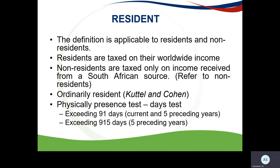There are tests to determine whether you are a resident. The ordinarily resident test was examined in the Cuttle and Cohen cases. Cuttle was ordinarily resident in the USA, although he also had a home in South Africa. In the Cohen case, the court held that where a person returns after his wanderings is where his ordinary residence is — in Cohen's case, that was South Africa.